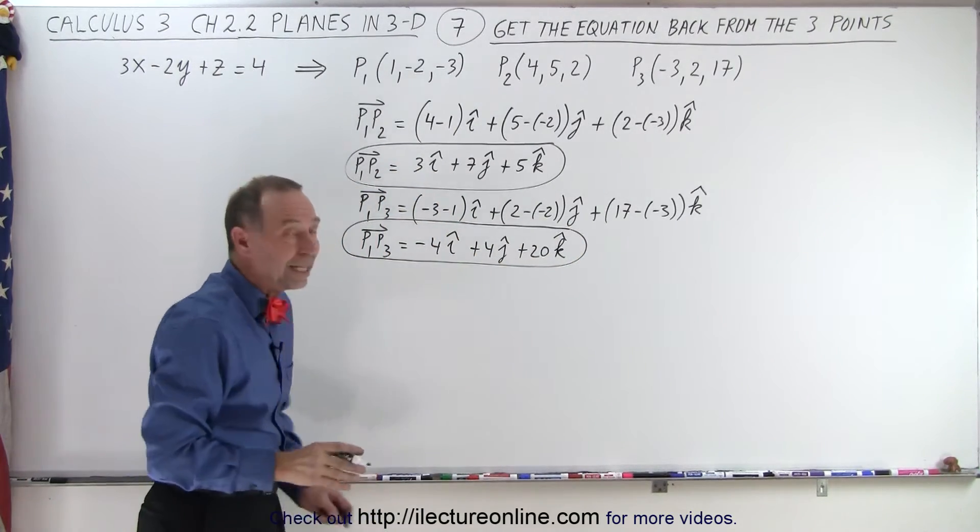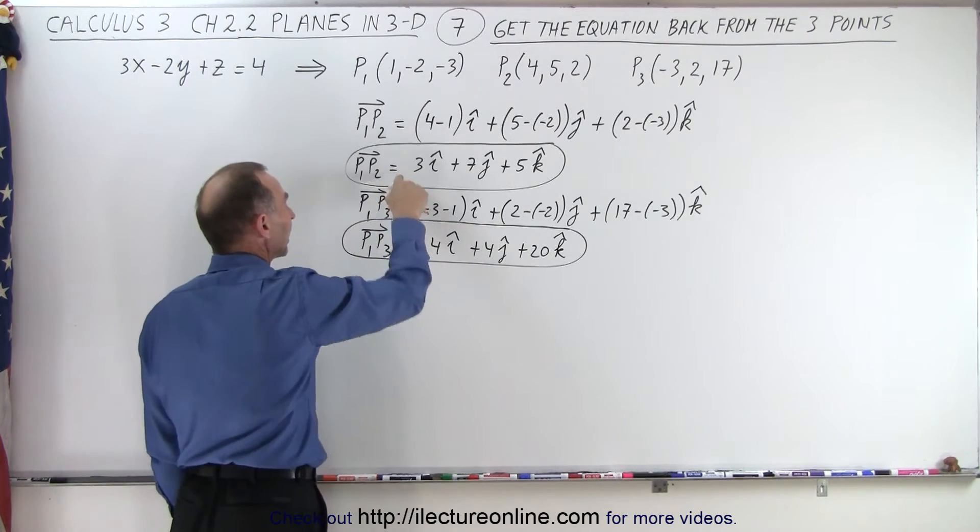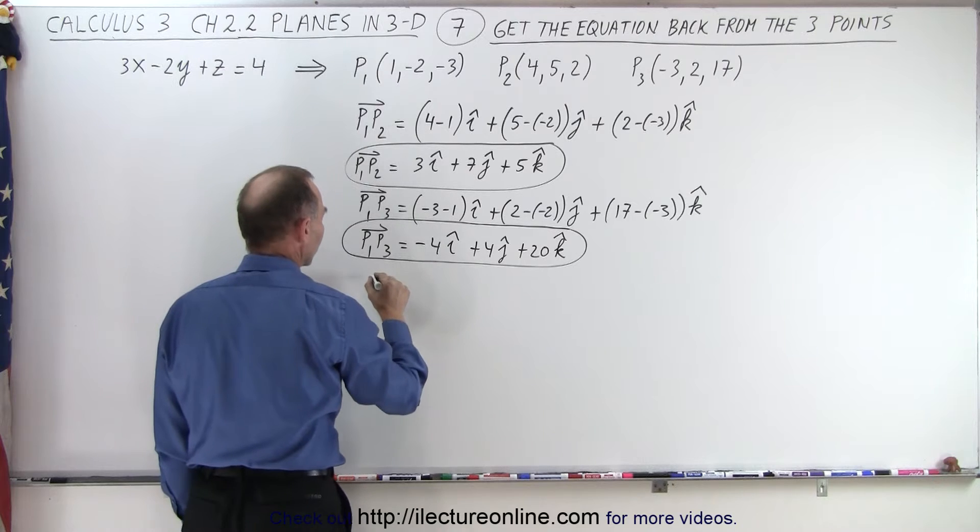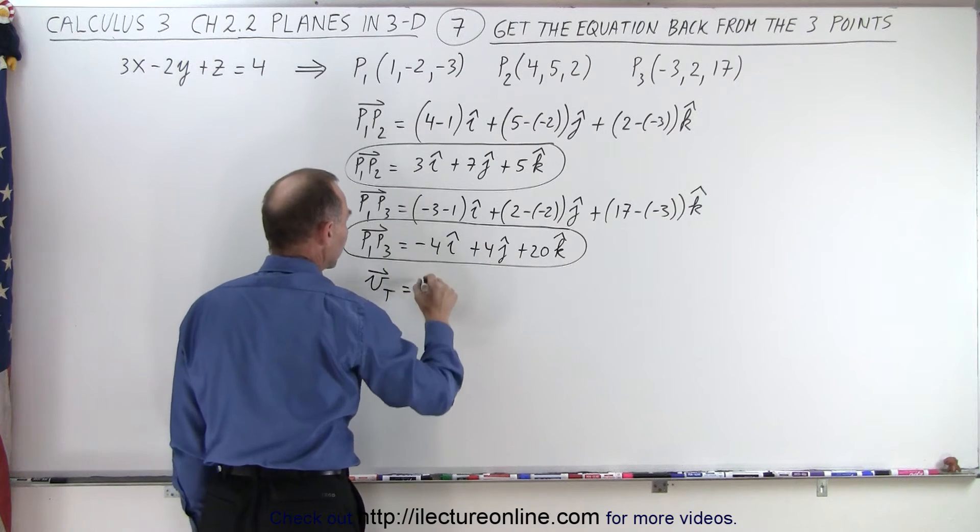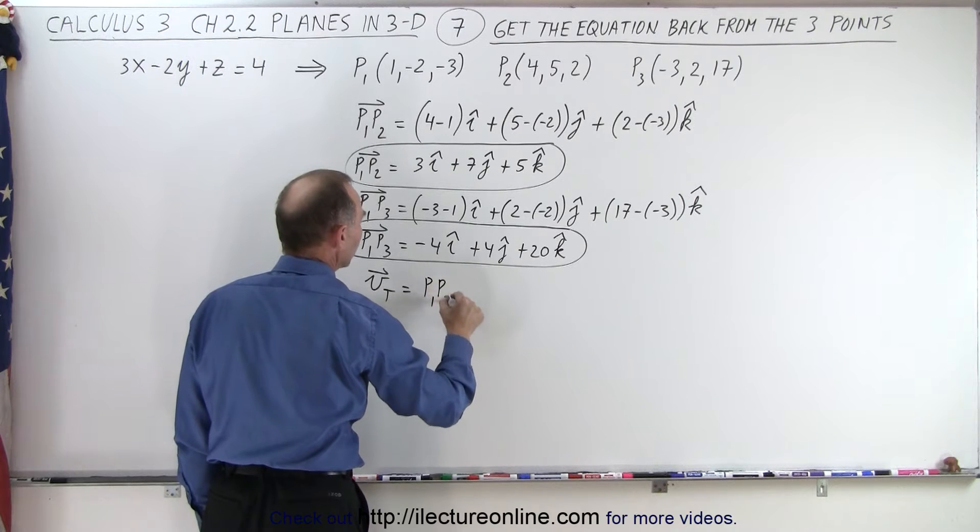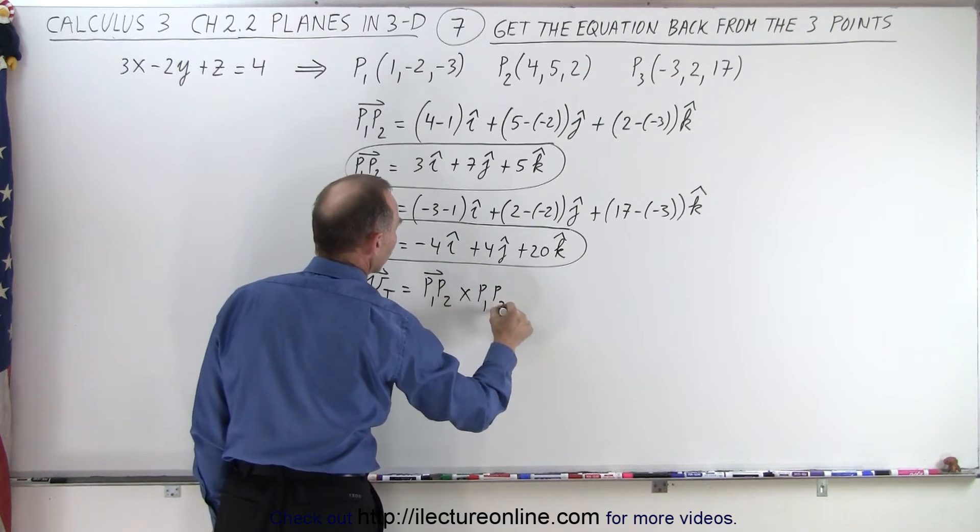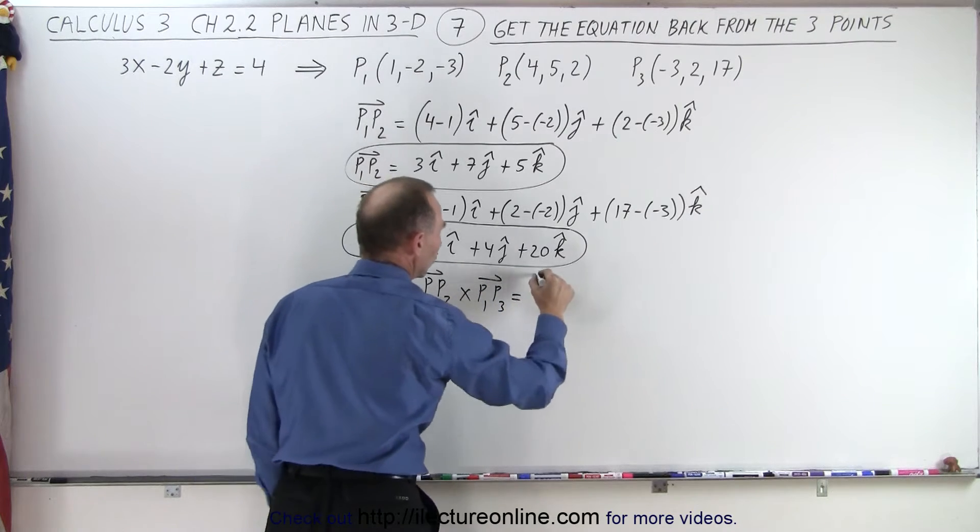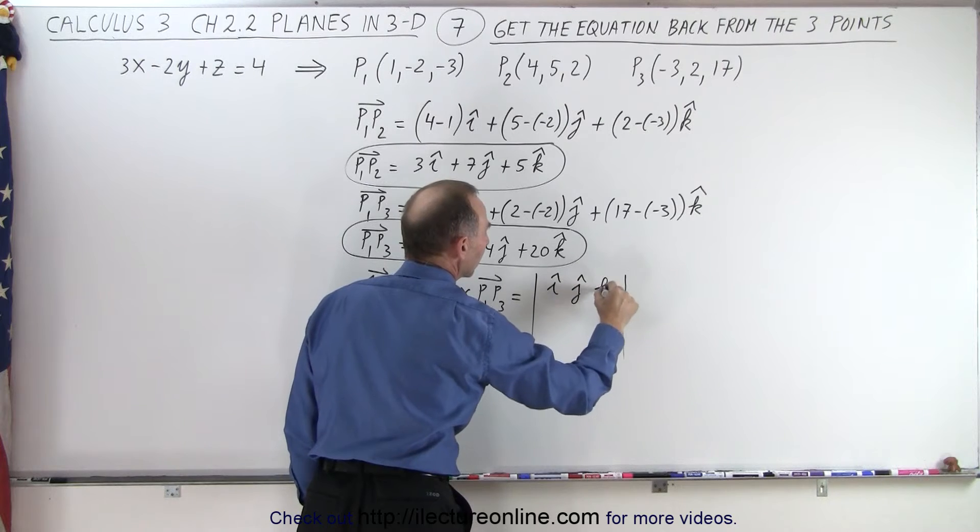To find the equation of a plane, we need the vector that's perpendicular to the plane, and we can accomplish that by taking the cross product of these two vectors. So that means that v perpendicular is going to be equal to the cross product of P1 to P2 and P1 to P3. And so that's going to be equal to, in the matrix format, we have i, j, k,